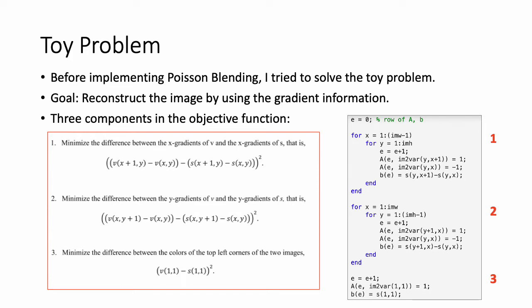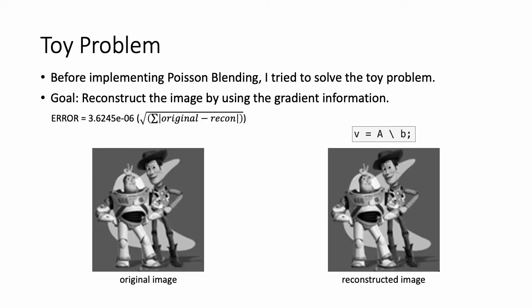Before implementing Poisson blending, I try to solve the toy problem. The goal is to reconstruct the image by using the gradient information of the original image. There are three terms in the objective function: x-gradient constraints, y-gradient constraints, and intensity value constraints for one top-left pixel. In MATLAB, I construct a matrix A and a vector B according to the equations. By solving the problem, I got the reconstructed image. It looks the same as the original image, and actually the error was very low.